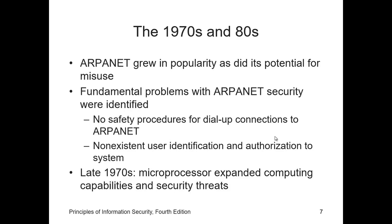Much of the focus for research on computer security centered on a system called Multics — the Multiplexed Information and Computing Services. In mid-1969, not long after the restructuring of the Multics project, several key players created a new operating system called UNIX. While the Multics system had planned security with multiple security levels and passwords, the UNIX system did not.